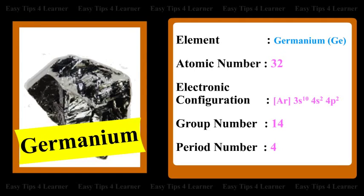For the element Germanium, the electronic configuration is Ar 3D10-4S2-4P2. The group number is 14 and the period number is 4.